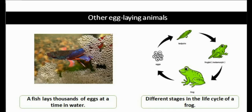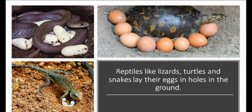Other egg-laying animals include frogs and fishes. They lay their eggs in water and care for their babies only for a short period of time. A frog's eggs develop into a tadpole, which keeps growing and slowly changes into an adult frog. A fish lays thousands of eggs at a time in the water, but only a few hundred grow into baby fish, as many eggs and baby fish are eaten by bigger fish.